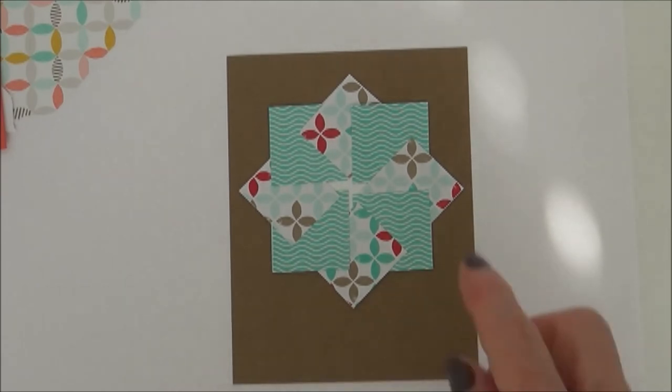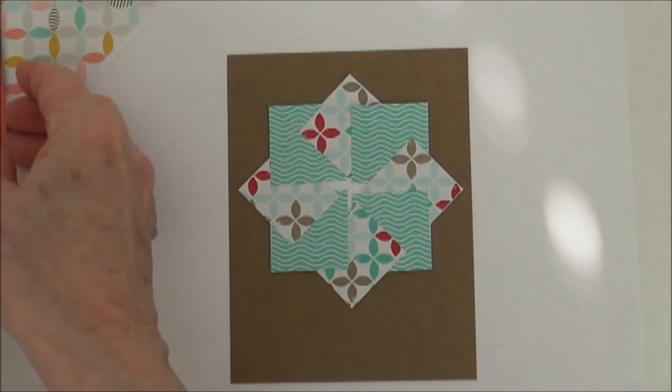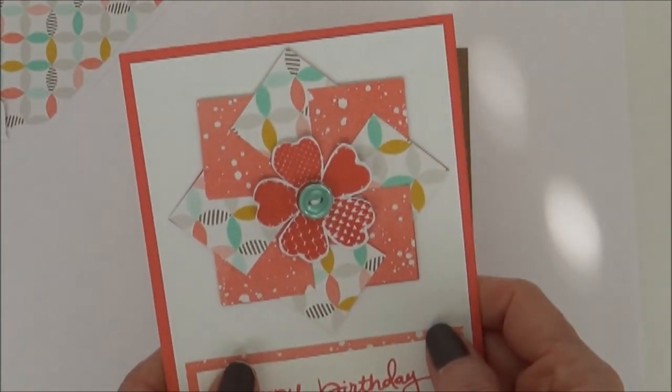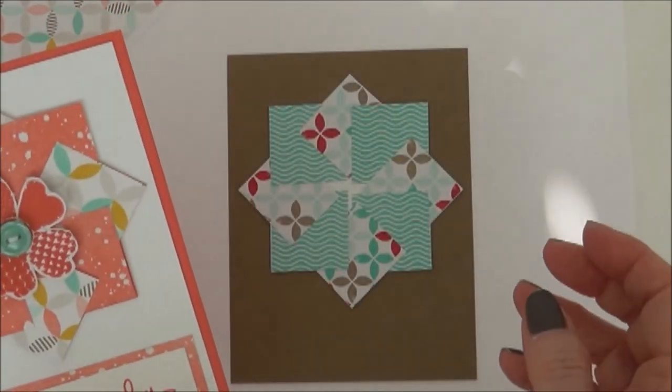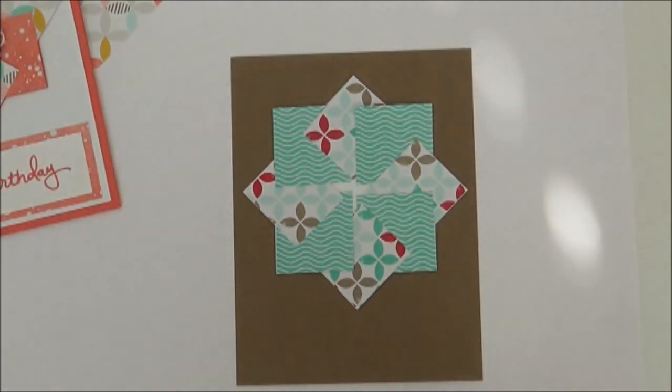It's the cutest thing and it's so simple. Now I would put a cute little button in here or like I did with this one, I cut a little pansy flower out and then put the button with a little bit of twine in there. But at least this will show you how to make the pinwheel part of it so that you can make it in any color that you want.